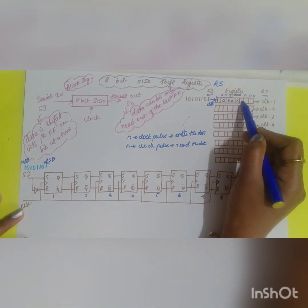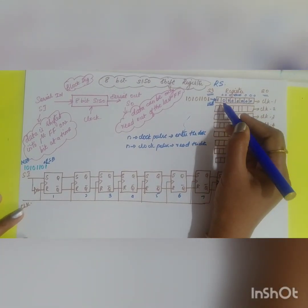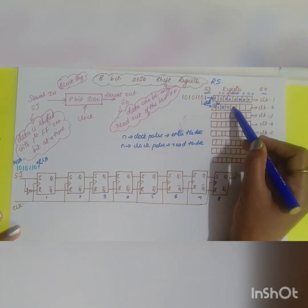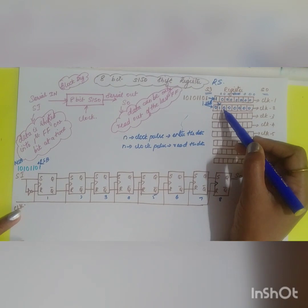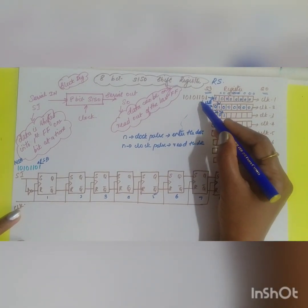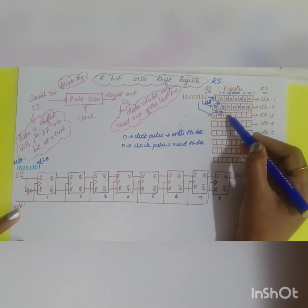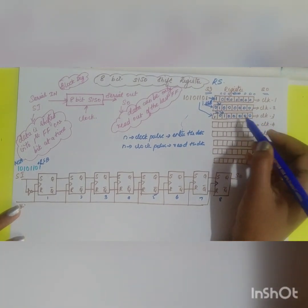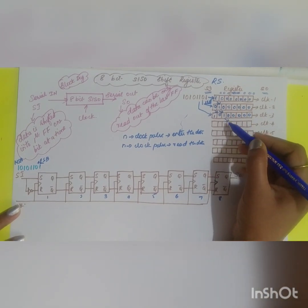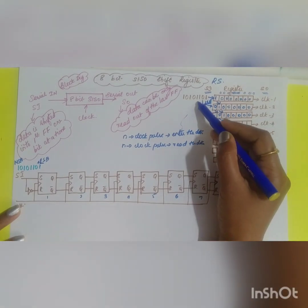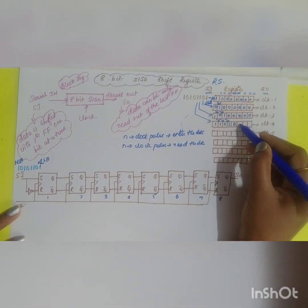Initially, all register contents are assumed to be zero — the registers are cleared. During the first clock pulse, the first bit (LSB = 1) enters the first flip-flop; all remaining contents stay zero. During the second clock pulse, that 1 shifts to the second flip-flop and the next data bit enters the first flip-flop. During the third clock pulse, data continues shifting: 1 moves further, 0 shifts in behind it, and the third data bit enters. During the fourth clock pulse, shifting continues and the next data bit (1) enters the first flip-flop.